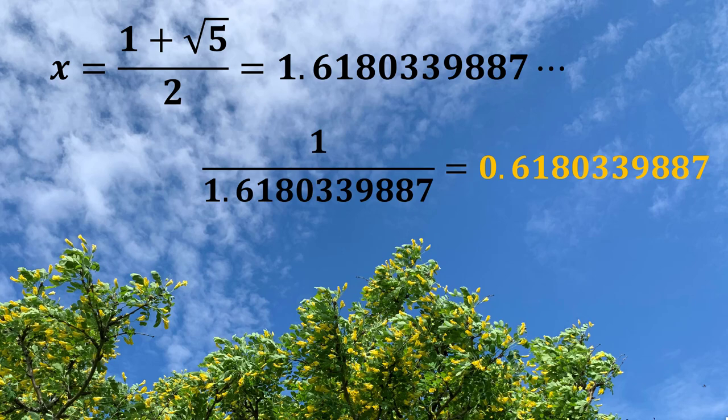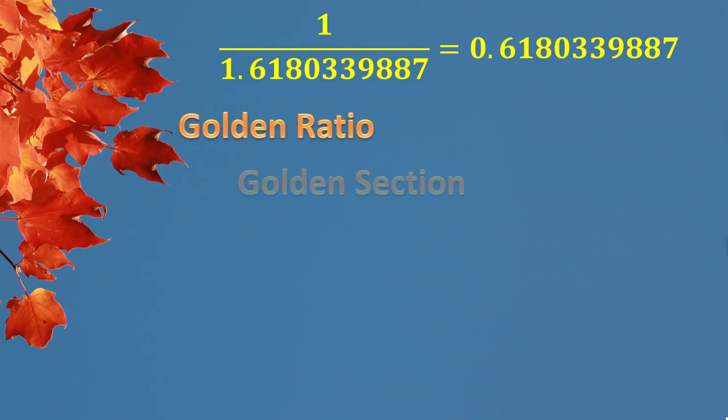An interesting fact. You can see, if you use one over this original number, you turn out the other side exactly with the same decimal numbers without the whole number part, one. This is golden ratio. Something interesting already. Here it is. It could be called the golden section, golden mean, golden proportion, golden number.